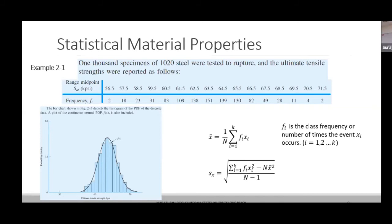The pros are: using the minimum strength value gives a highly fail-proof design. The cons are: you will have a very bulky, heavy design because you are assuming very low strength. Using the maximum value gives highly optimized weight but is very risky. The middle value — the mean — is a trade-off between weight savings and strength optimization. As a design engineer, you need to know the range of properties and whether that range is broad or narrow.